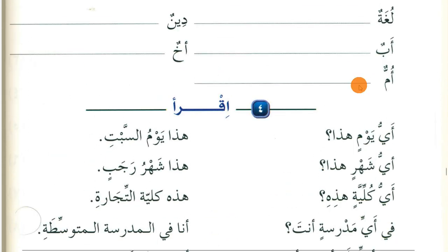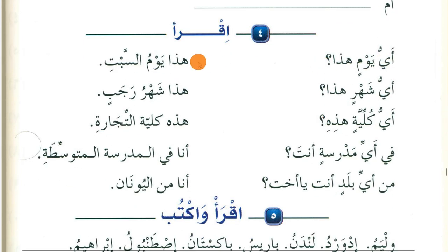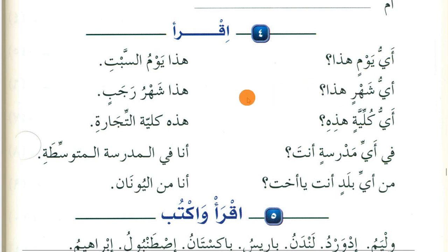Read: Ayyu yawmin hadha? — Which day is this? Hadha yawmu as-sabt — This is Saturday. Note: here 'ayya' has damma, and in the next example it has kasra. Ayyu shahrin hadha? — Which month is this? Hadha shahru Rajab — This is the month of Rajab. Ayyu kulliyyatin hadhihi? — Which faculty is this? Hadhihi kulliyyatu al-tijara — This is the faculty of commerce.